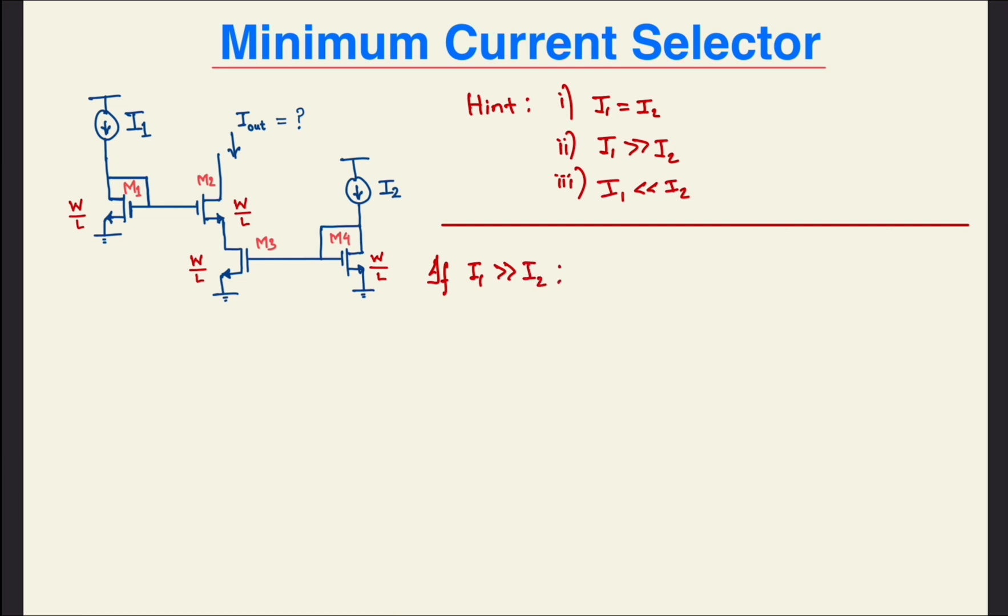I'll try to show how I analyzed this circuit when I first saw it. Upon seeing the circuit, two things came to my mind: current mirror and cascode.